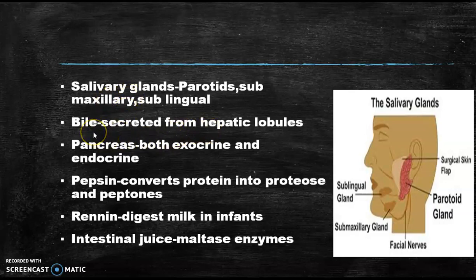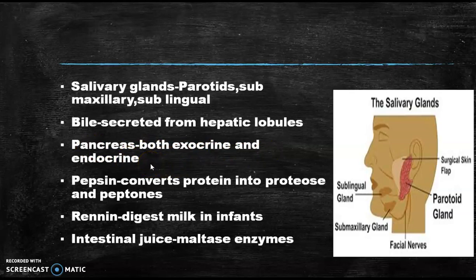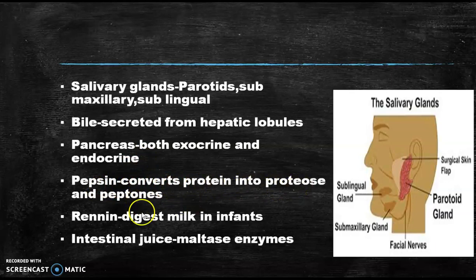Bile juice also helps in the digestion of food and is secreted from the hepatic lobules of the liver. Pancreas is an important gland that acts both as an exocrine and endocrine gland — it can secrete hormones like insulin and glucagon. Pepsin is an enzyme that converts protein into proteoses and peptones. Renin is the enzyme which digests milk in infants. Intestinal juice contains maltase enzymes that act on maltose.